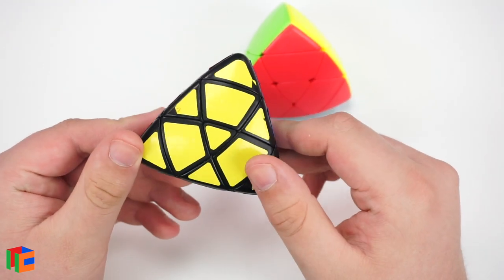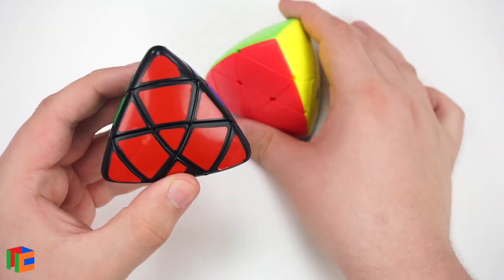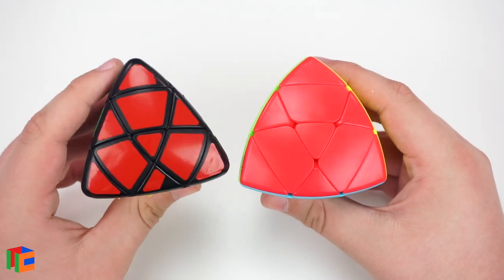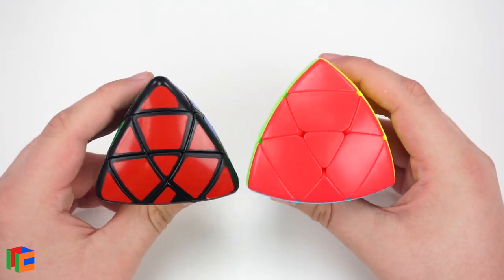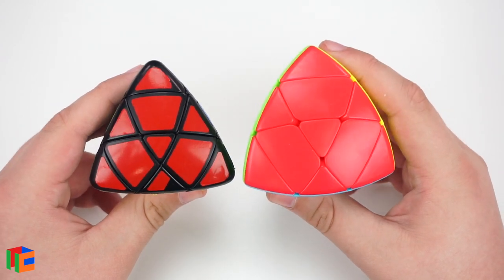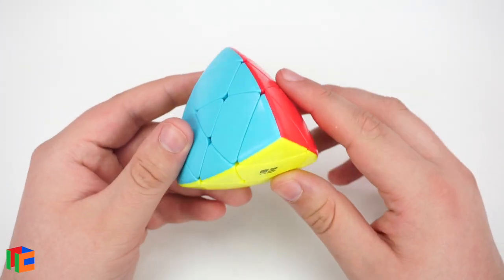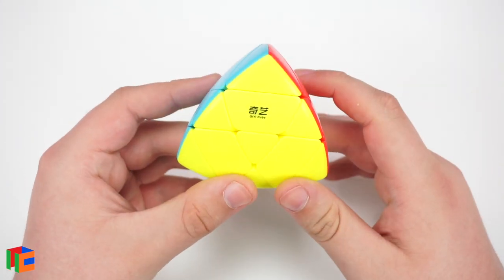So here is just more of a standard Master Morphix. I think this is from Lanlan. And so if you compare the shapes of the sides, this one is more triangular while this one over here is more curved. So that's like the difference between the two. But this is a new Master Morphix from Chi.